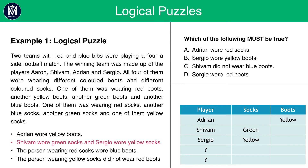Then we know Shivam wore green socks and Sergio wore yellow socks, so we fill those in. The next clue states that the person wearing red socks wore blue boots. That has to be a different person to the three already listed — it is likely Aaron, but we don't need to confirm this right now. The next statement is that the person wearing yellow socks did not wear red boots, which means Sergio did not wear red boots.